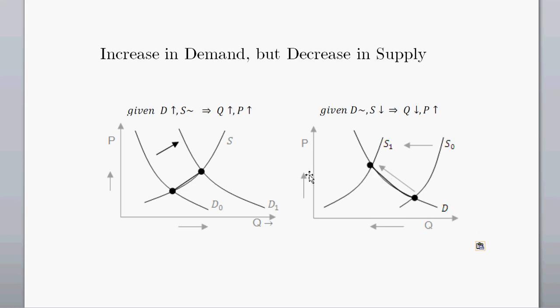When we tie it together, the price movement is the same in both shifts. So when we have an increase in demand and a decrease in supply, price is going to move in the same direction — we can expect price to go up. However, the shift out in the demand curve increases quantity, but the shift in the supply curve decreases quantity. So we actually don't know what's going to happen to quantity — it depends on the strength of those two effects and the elasticity.